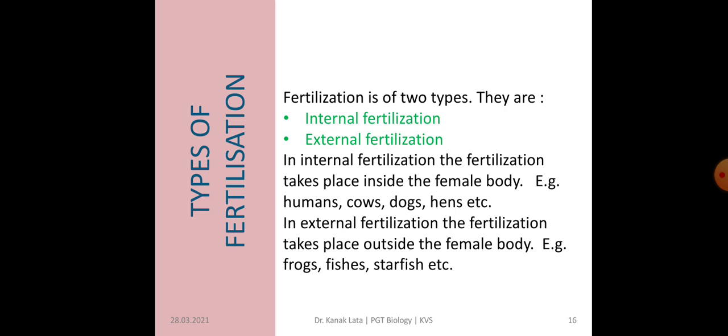In internal fertilization, the fertilization takes place inside the body of the female — for example, in humans, cows, dogs, and hens. Whereas in external fertilization, the fertilization takes place outside the female body — for example, in frogs, fishes, and starfish, the fertilization is external.